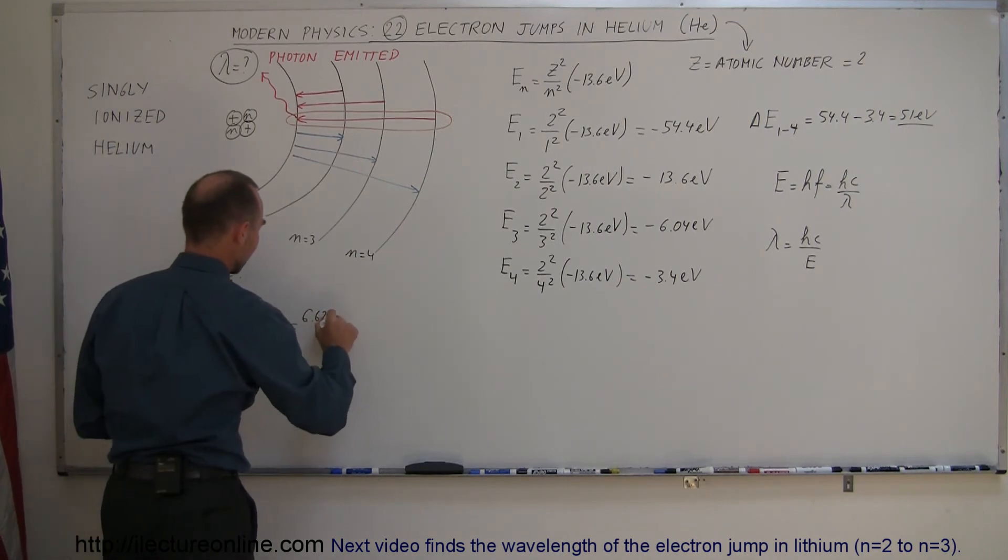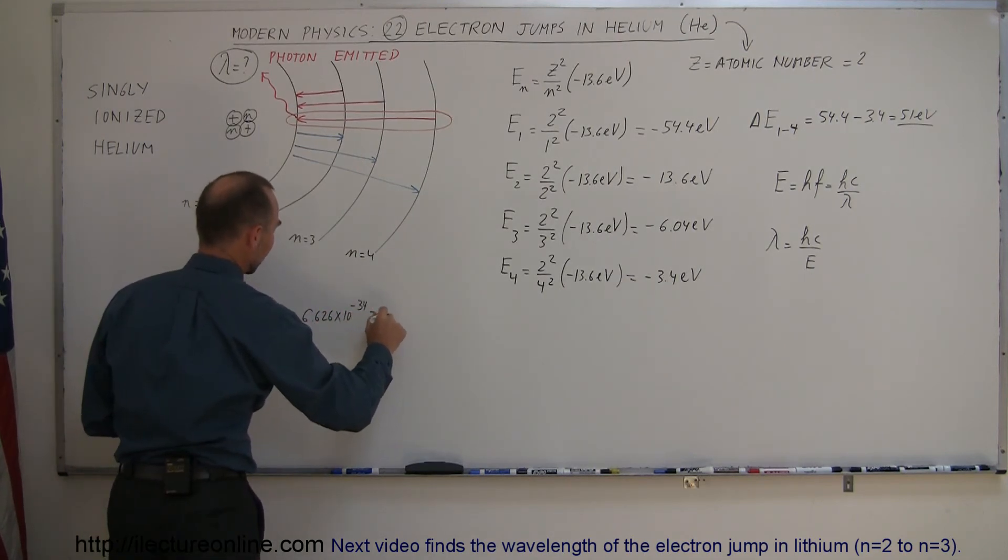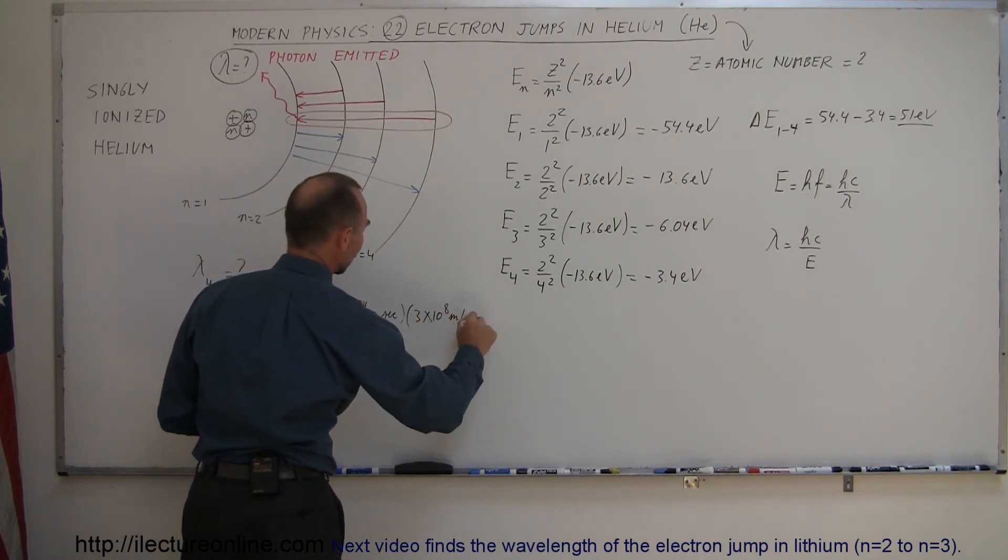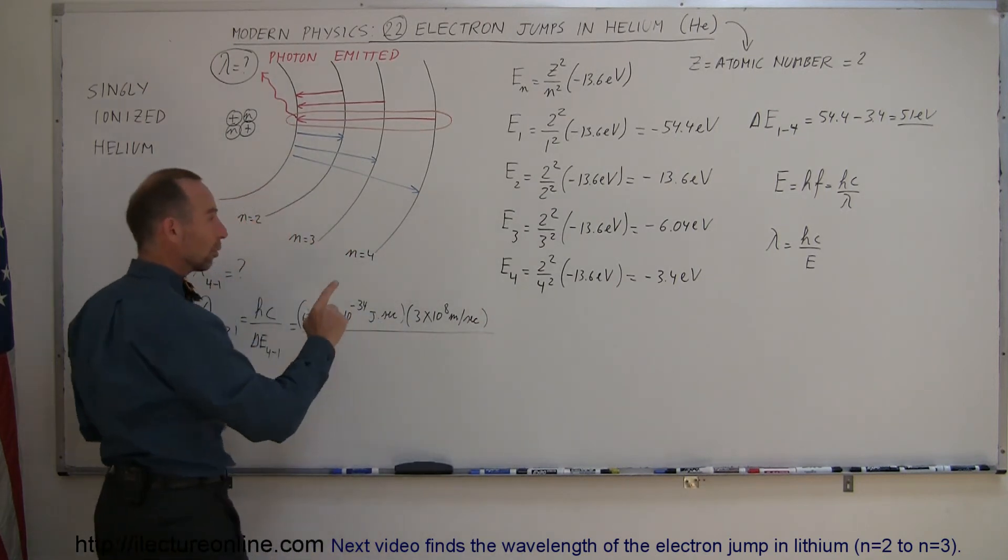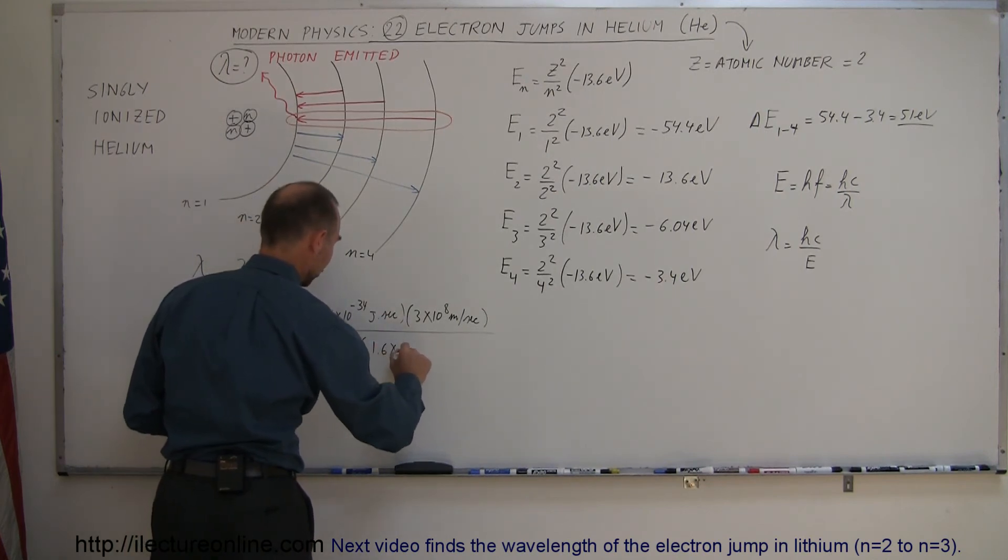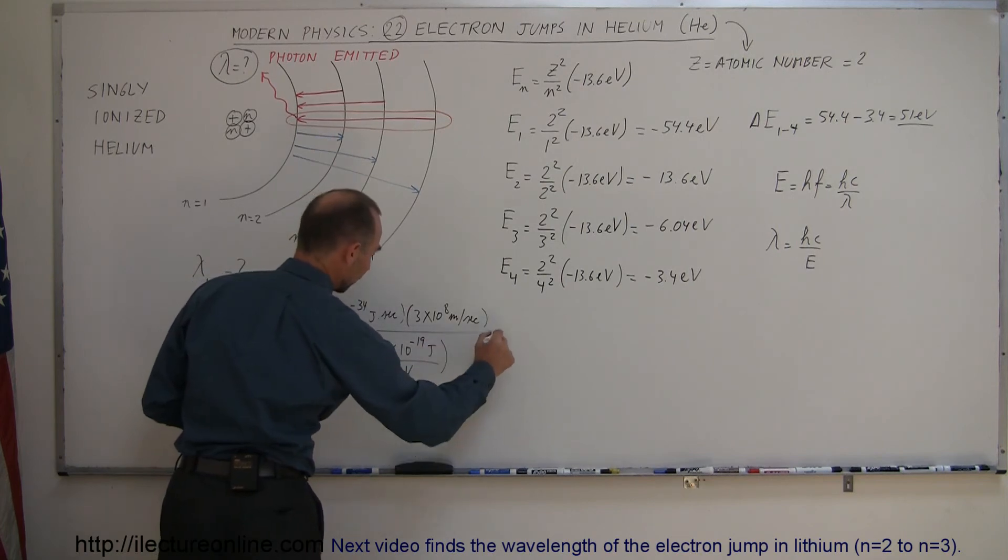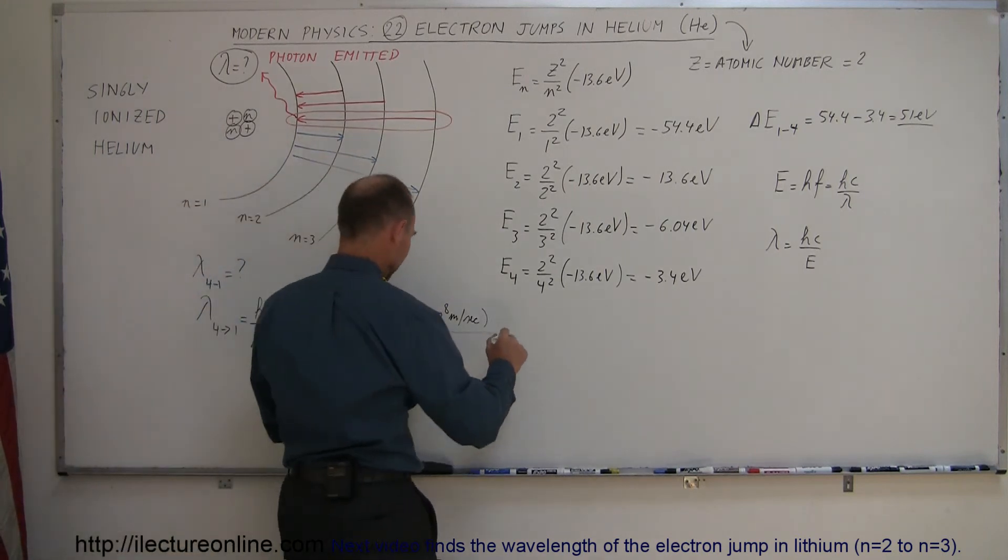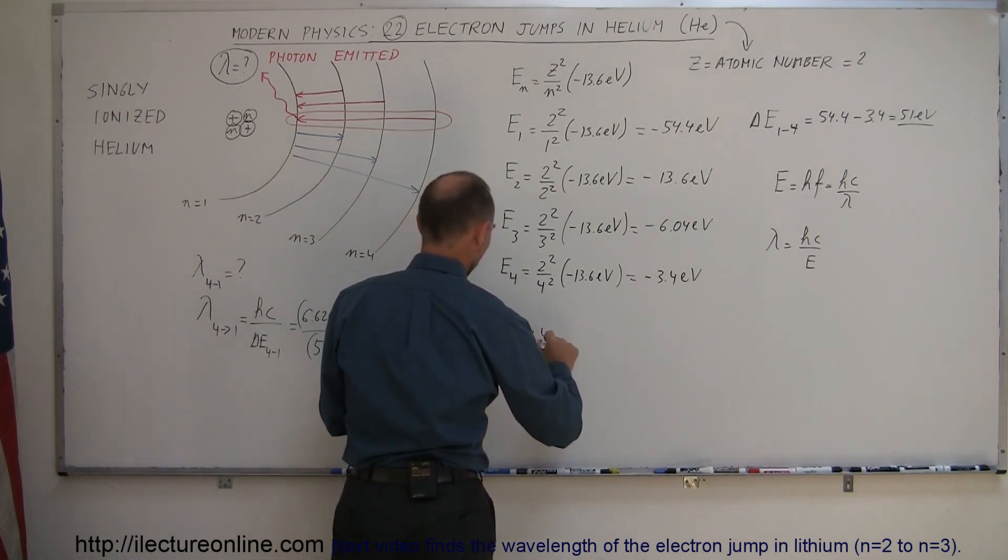And so this is equal to 6.626 times 10 to the minus 34 joule-seconds, multiplied times 3 times 10 to the 8 meters per second, divided by the energy difference, which we said was 51 electron volts, and then we multiply that times the conversion into joules, 1.6 times 10 to the minus 19 joules per one electron volt, so that the numbers come out right. So 6.626E-34 times 3E8 divided by 51 and divided by 1.6E-19 equals, and it is equal to 24.4 nanometers.